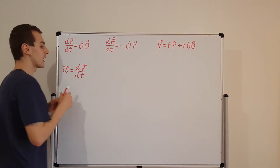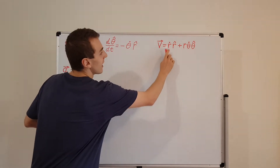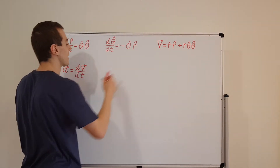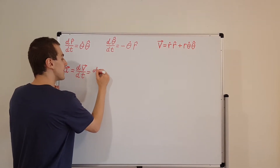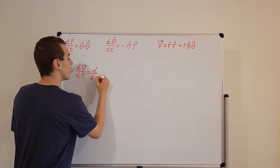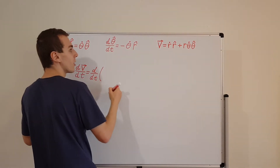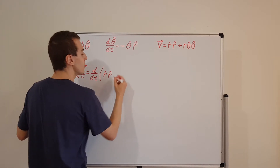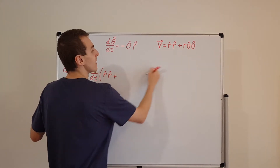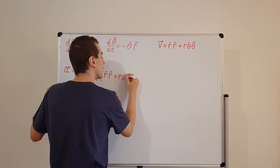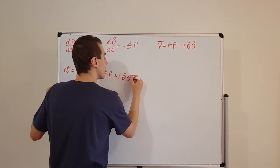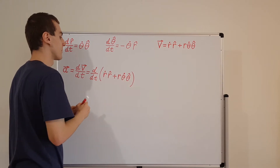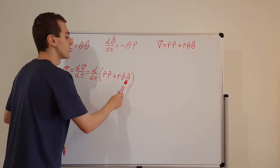Let's write the velocity expression in terms of r-hat and theta-hat. We need d/dt of our first term — the radial component, which is r-dot times r-hat — and then we add to that the tangential component, r theta-dot times theta-hat. So we've got the radial and tangential components, and we're going to have to differentiate this with respect to time.